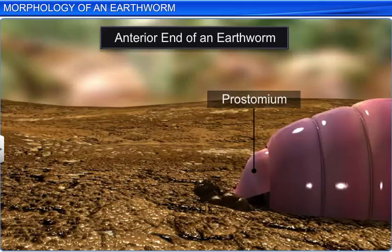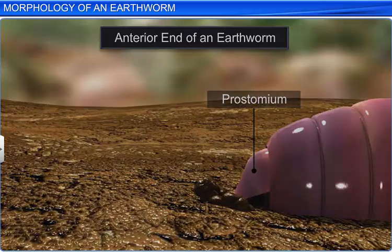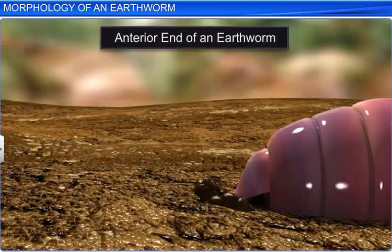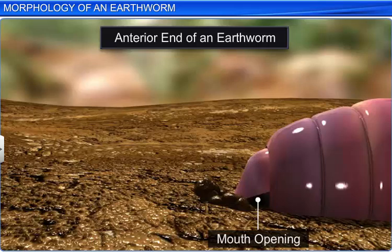The anterior end also bears the mouth, which is attached to the first body segment called the peristomium, or the buccal segment. The mouth is covered by the prostomium.